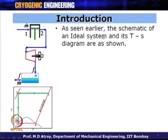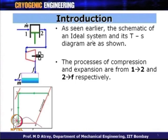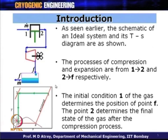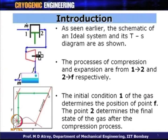This is the ideal system. The schematic of an ideal system and its T-S diagram are given here. It has a gas input, a compressor, and an expander. The corresponding T-S diagram shows 1 to 2 as a compression process and 2 to f as an isentropic expansion process. The process of compression and expansion are from 1 to 2 and 2 to f respectively. The initial condition at point 1 — for example, 300 Kelvin and 1 bar — determines the position of f, which corresponds to the boiling point of the gas at 1 bar.